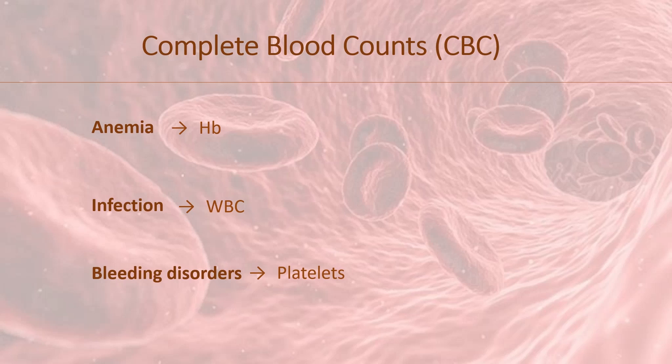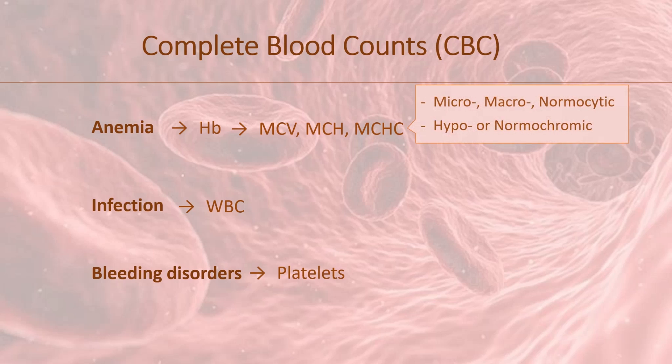When we come across anemia, we tend to look for the red cell indices like mean corpuscular volume or MCV, mean corpuscular hemoglobin, that is MCH, and mean corpuscular hemoglobin concentration, or MCHC. These indices help us classify anemia as microcytic, macrocytic or normocytic, and whether the cells are hypochromic or normochromic.